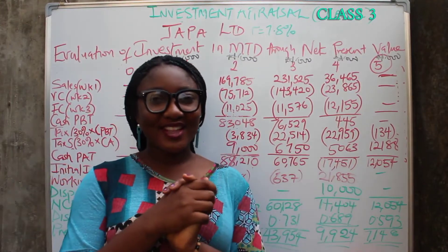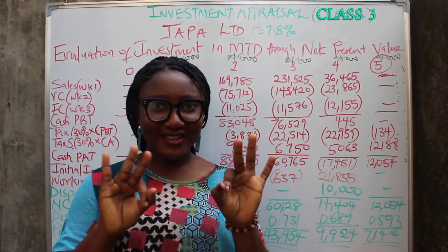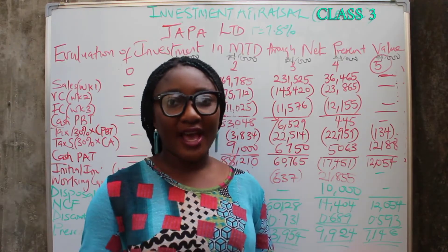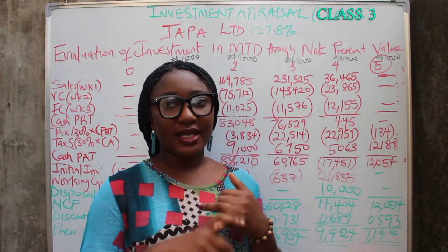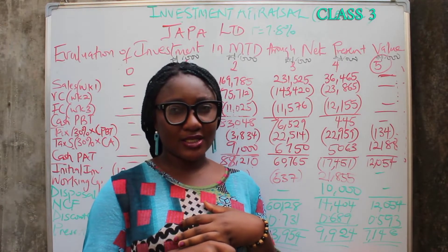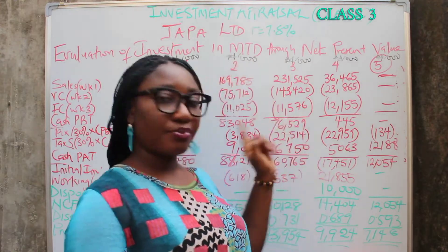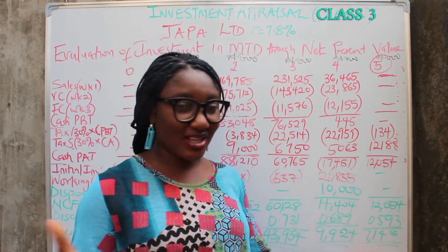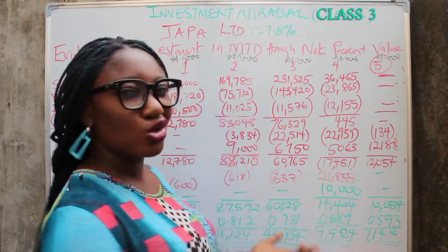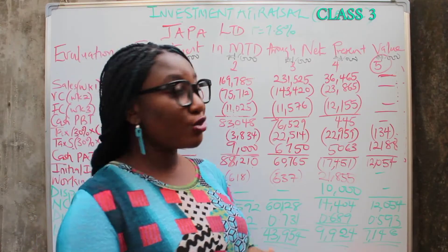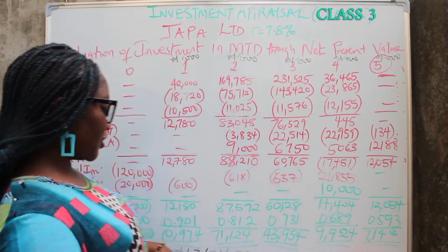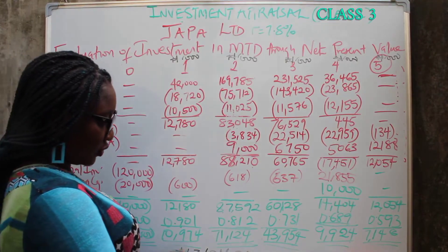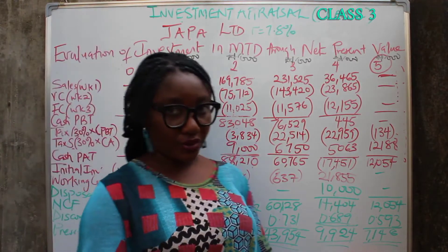Welcome to class 3 of investment appraisal. We are going to solve IRR and MIRR in this class, because we have already done NPV. I broke the class into bits because if it's too long, you might not be able to watch it. We already solved NPV and got a positive NPV of 3,124,000.